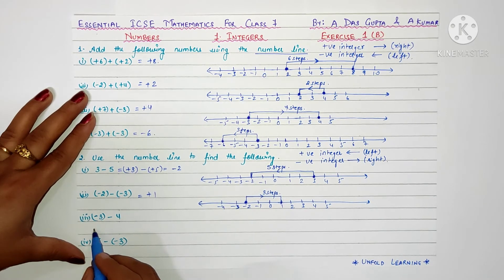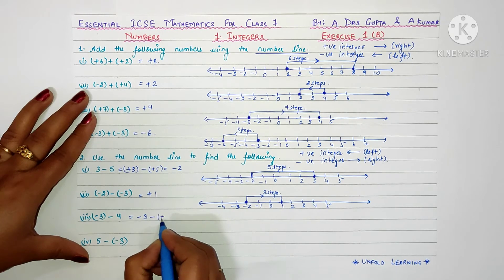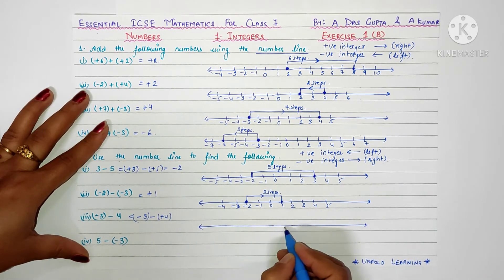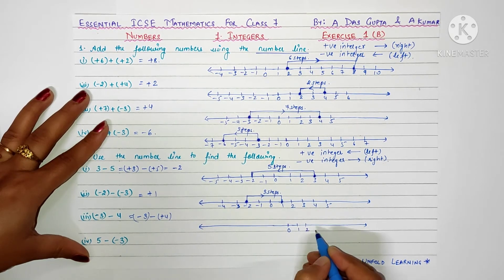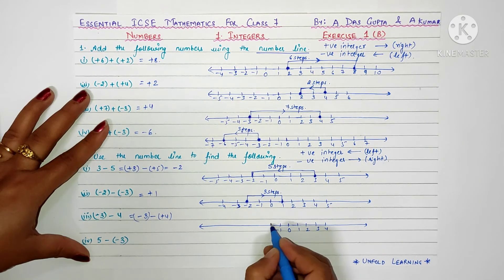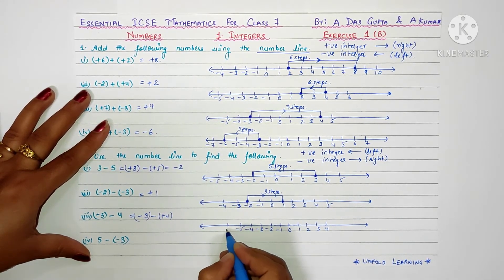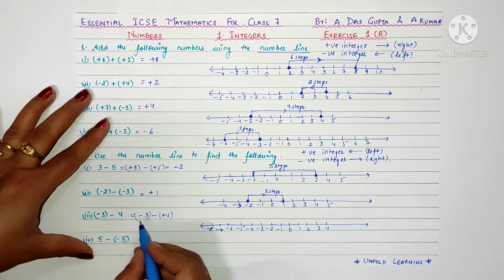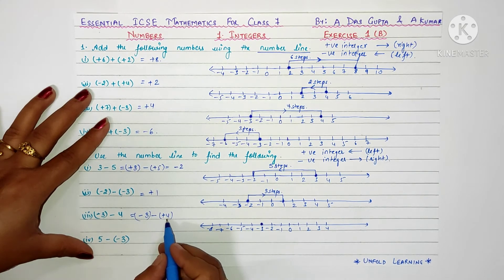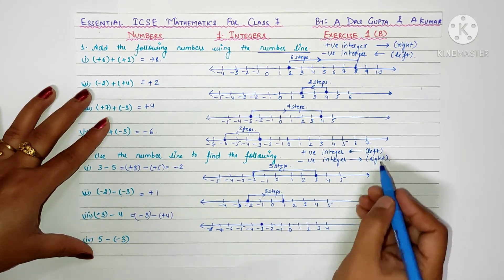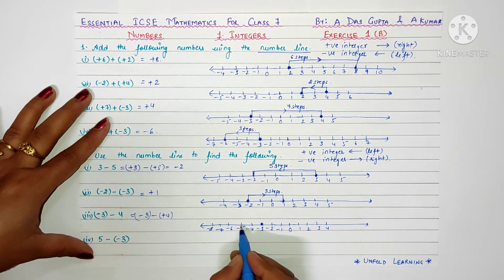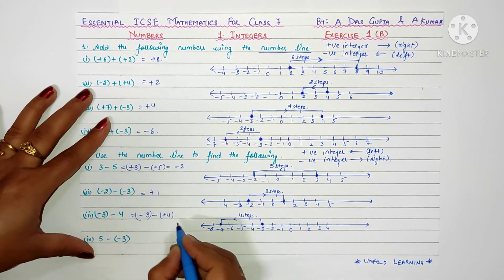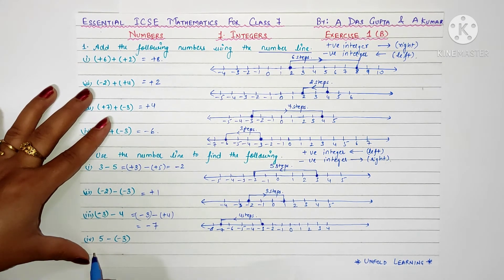Next question is minus three minus four, which we can write as minus three minus of plus four. I'll draw a number line and mark zero, one, two, three, four, minus one through minus eight. We start at minus three and need to subtract plus four — positive integer, so move left — four steps: one, two, three, four. We moved four steps, so the answer is minus seven.